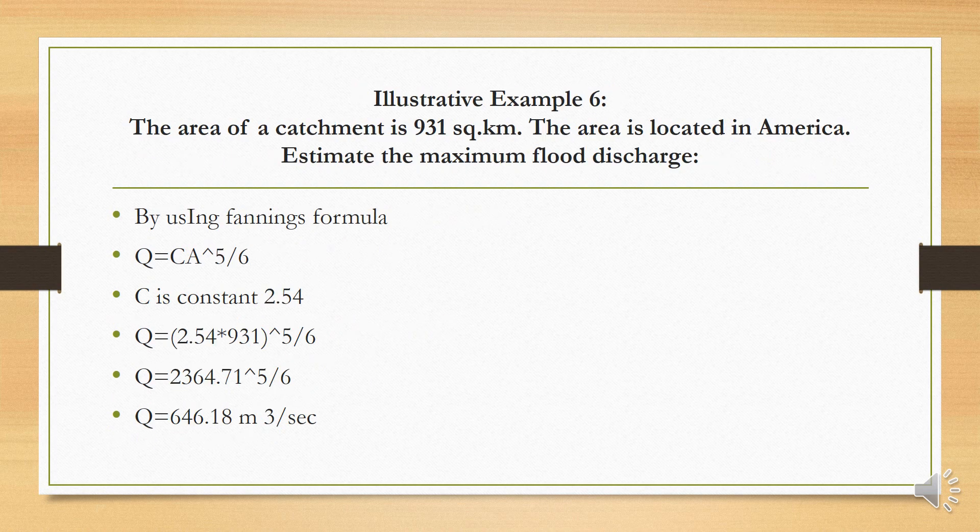Example 6: The area of catchment is 931 km², located in America. Estimate the maximum flood discharge. For American catchment, we use Fanning's formula: Q = C × A^(5/6), where C = 2.54. Substituting: Q = 2.54 × 931^(5/6). Solving gives maximum flood discharge Q = 646.18 m³/s.